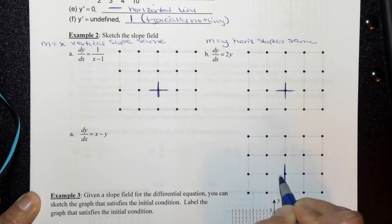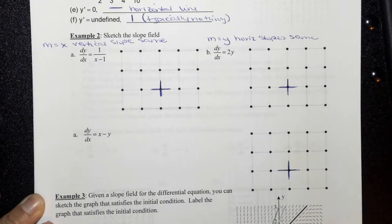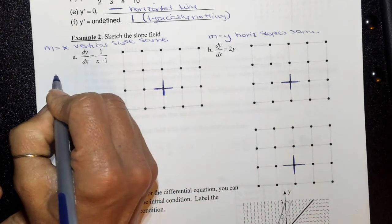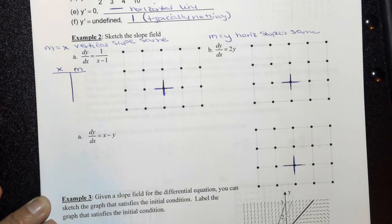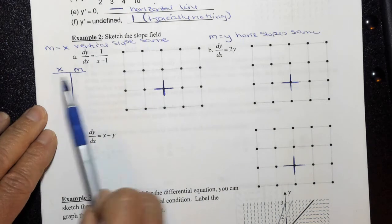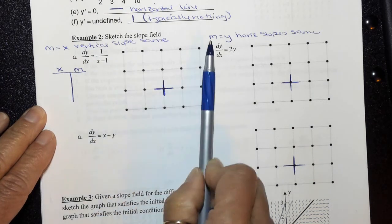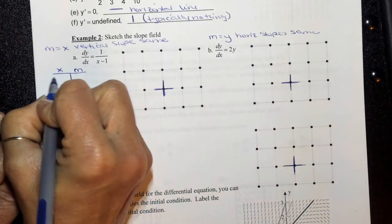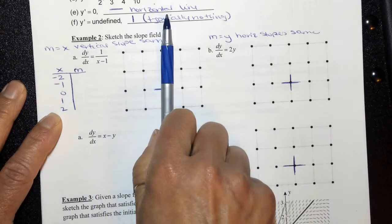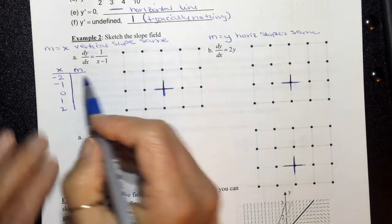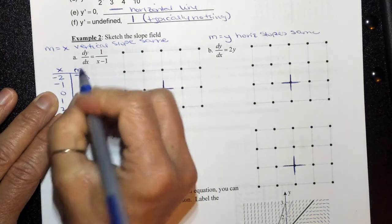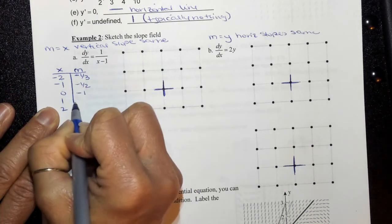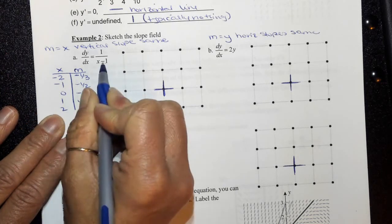This will help me determine what values I need to include in my t-table. To create the t-table, the x values I'm choosing range from negative 2 to 2: negative 2, negative 1, 0, 1, 2. This is all I have to plug in, and once I figure out my slope, all vertical slopes will be the same. So plugging in negative 2: 1 over (negative 2 minus 1) is negative 1/3. Plugging in negative 1 gives negative 1/2. Plugging in 0 gives negative 1. Plugging in 1 is undefined. And then 2 gives 1.